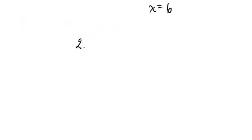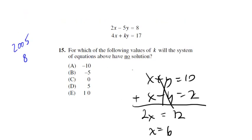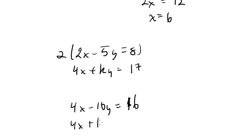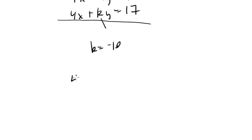We have 2x minus 5y equals 8 and 4x plus ky equals 17. What would we have to do for these to completely cancel out? Let's multiply the top equation by 2 on both sides. We get 4x minus 10y equals 16, and 4x plus ky equals 17. If I subtract them, if I can cancel out both of these, we're going to have no solution. So what is k going to have to equal? K will have to equal negative 10 in order to match.